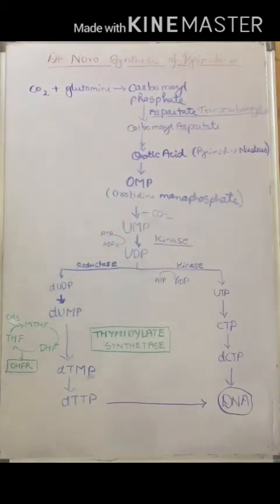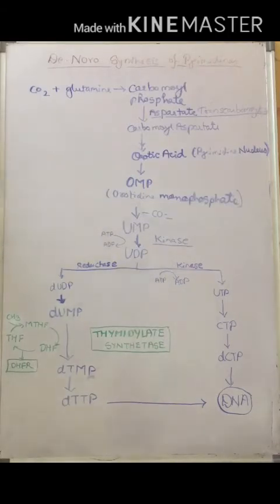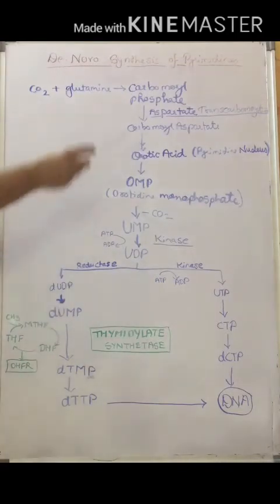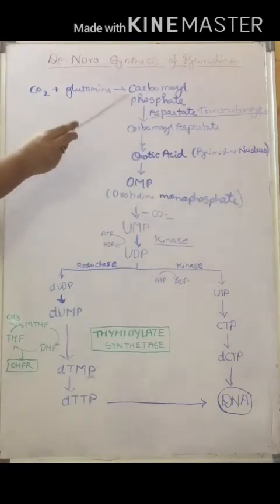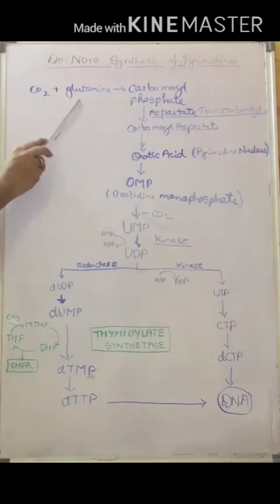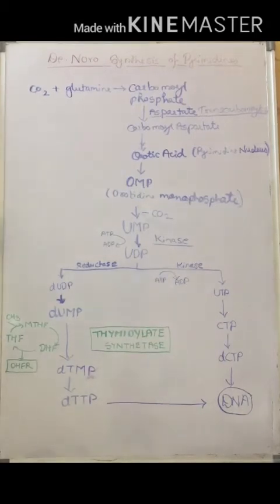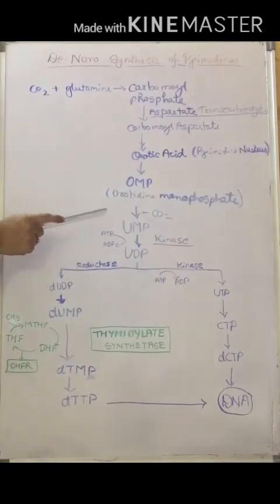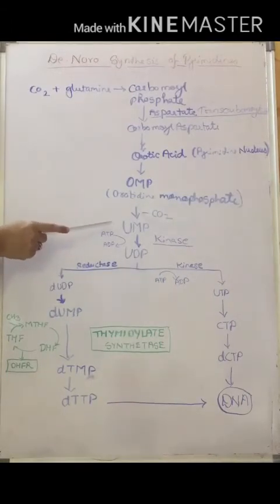Now we will look at the de novo synthesis of pyrimidines without going into excessive biochemical detail. Carbon dioxide and the amino acid glutamine form carbamoyl phosphate. In the presence of the enzyme carbamoylase, this forms carbamoyl aspartate, which is converted to orotic acid — where the pyrimidine nucleus is synthesized. Orotic acid is further converted to orotidine monophosphate, which undergoes decarboxylation to form uridine monophosphate (UMP).